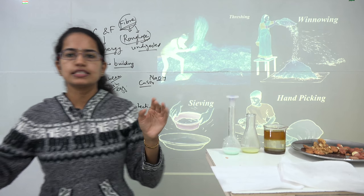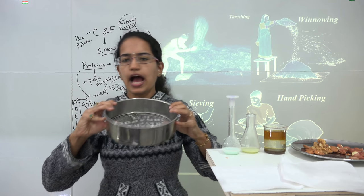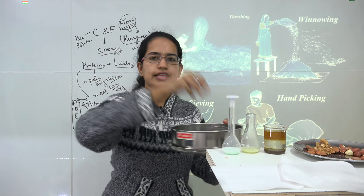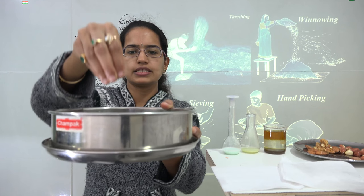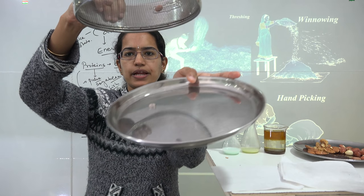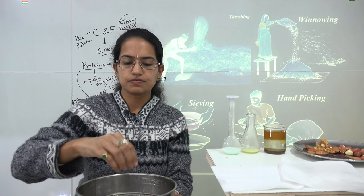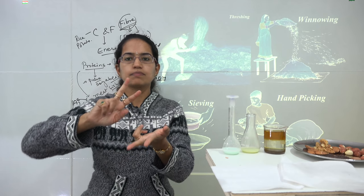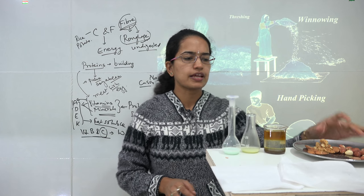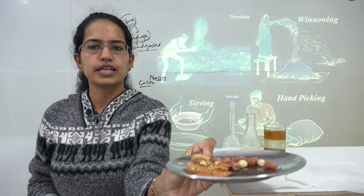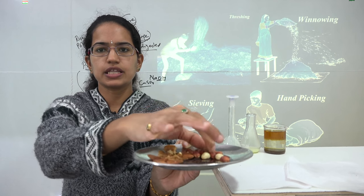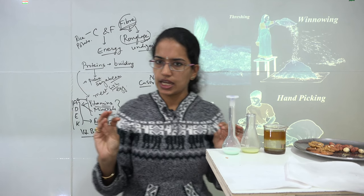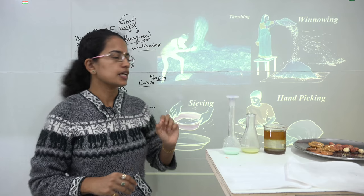The next method is sieving, done through a net. Using a tray with peanuts and mustard seeds, the small mustard seeds fall through to the plate below while the peanuts remain. Sieving separates things based on size and number. Finally, hand picking is very simple — you can separately pick mustard seeds, peanuts, almonds, and walnuts by hand. Hand picking can be done based on size, color, or shape.